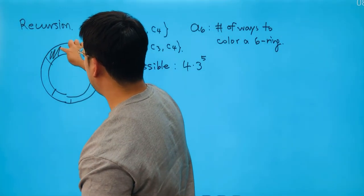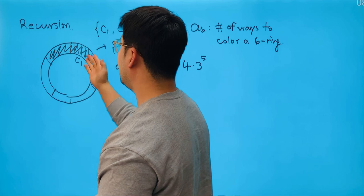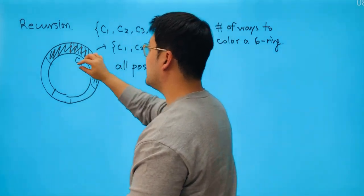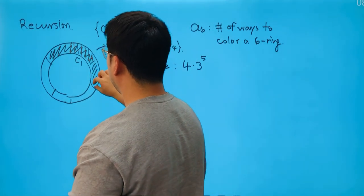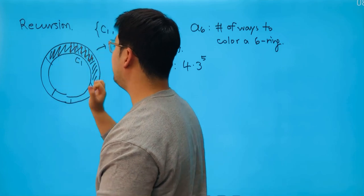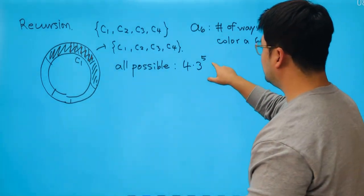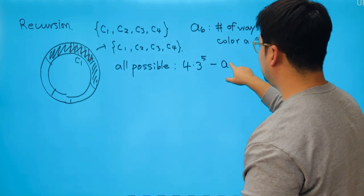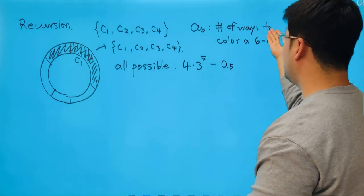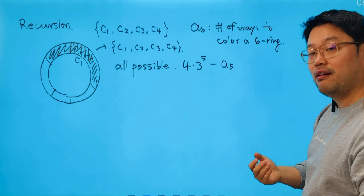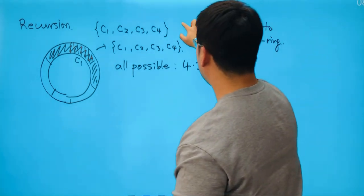to color a six ring satisfying the given conditions. Now here's what's up: if I have this part out here colored exactly the same as the first one, then it would have been one part, the second, the third part, fourth part, and the fifth part. So what I'm saying is that out of all possible cases, all I need to do is just subtract A_5, which is going to be the number of ways to color a six ring.